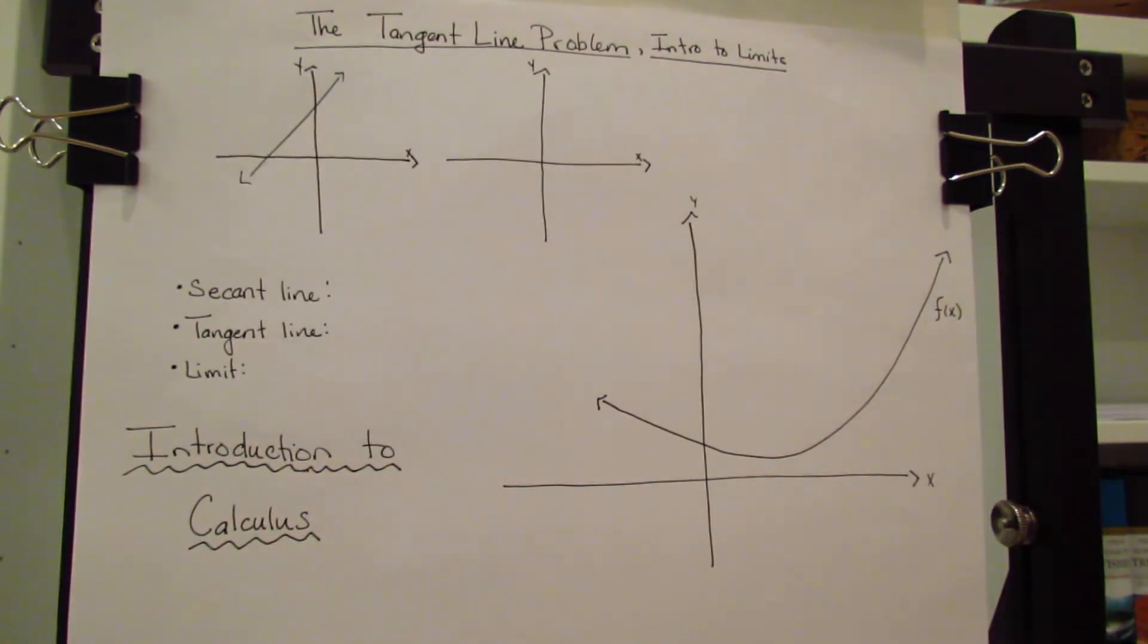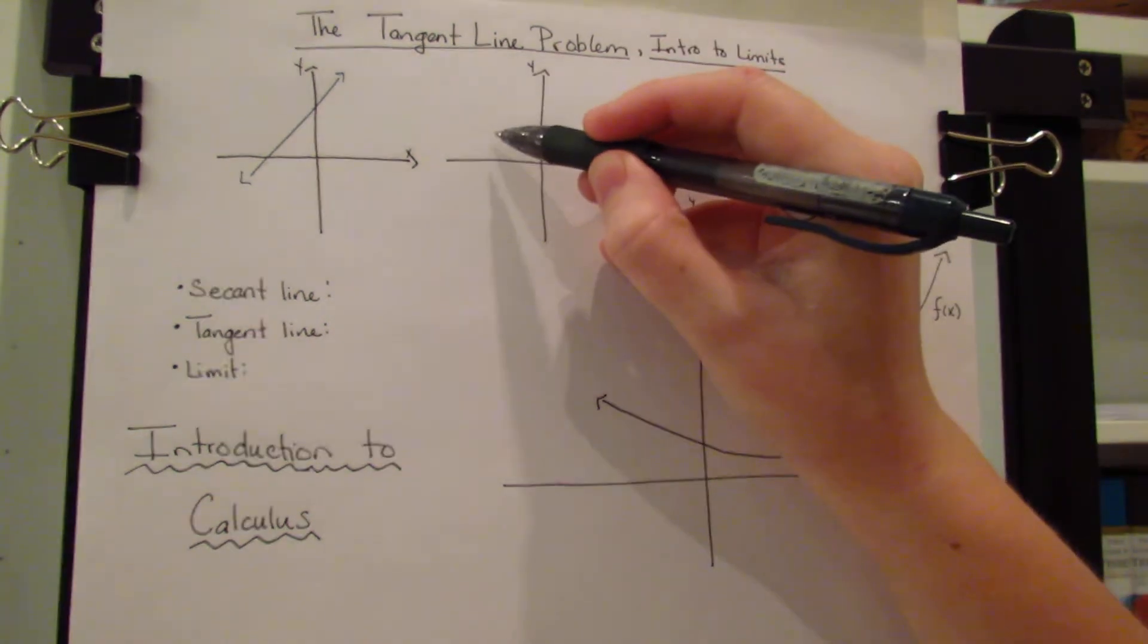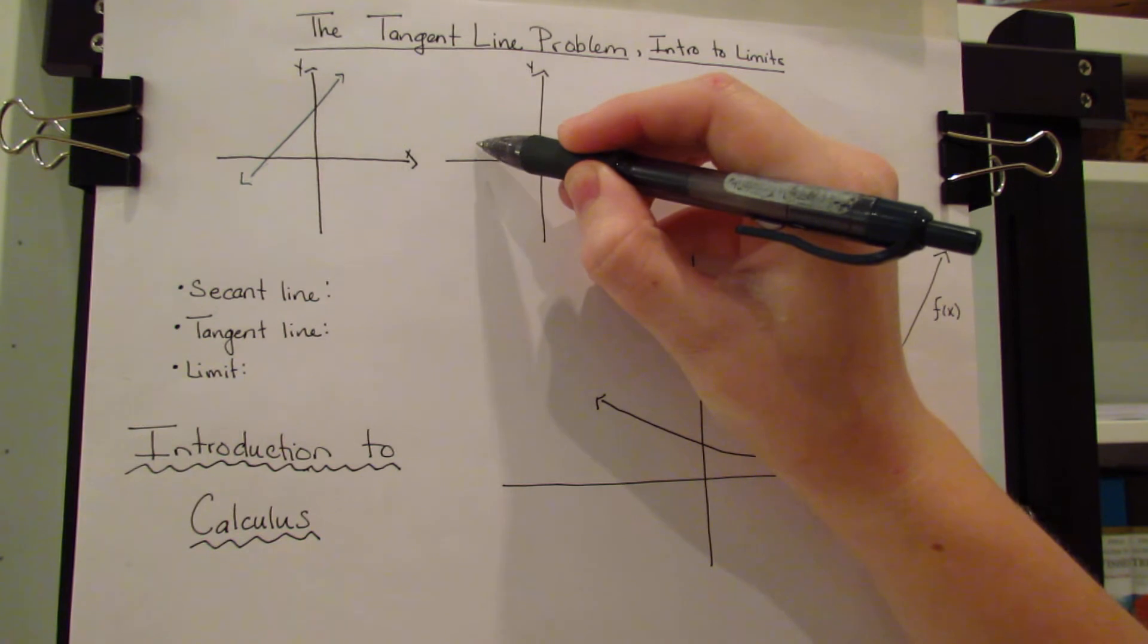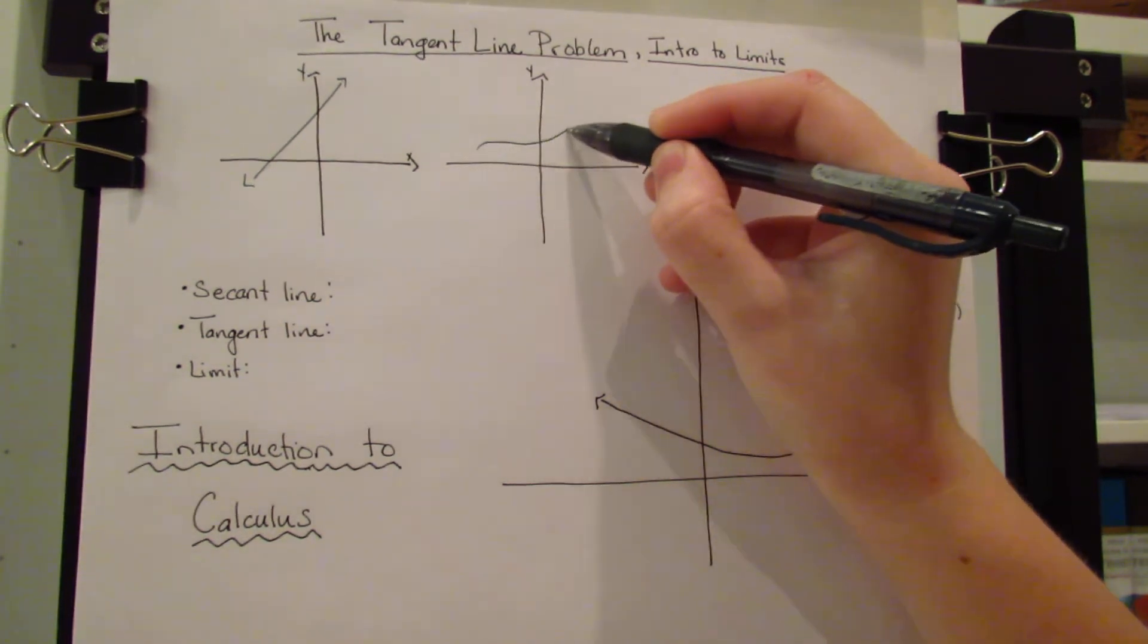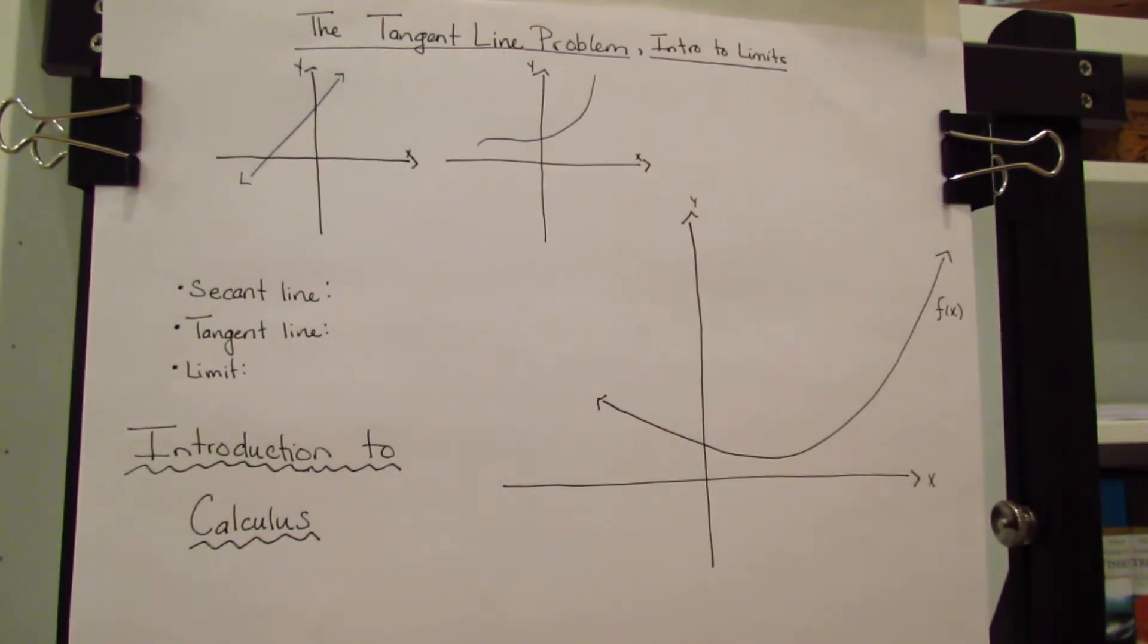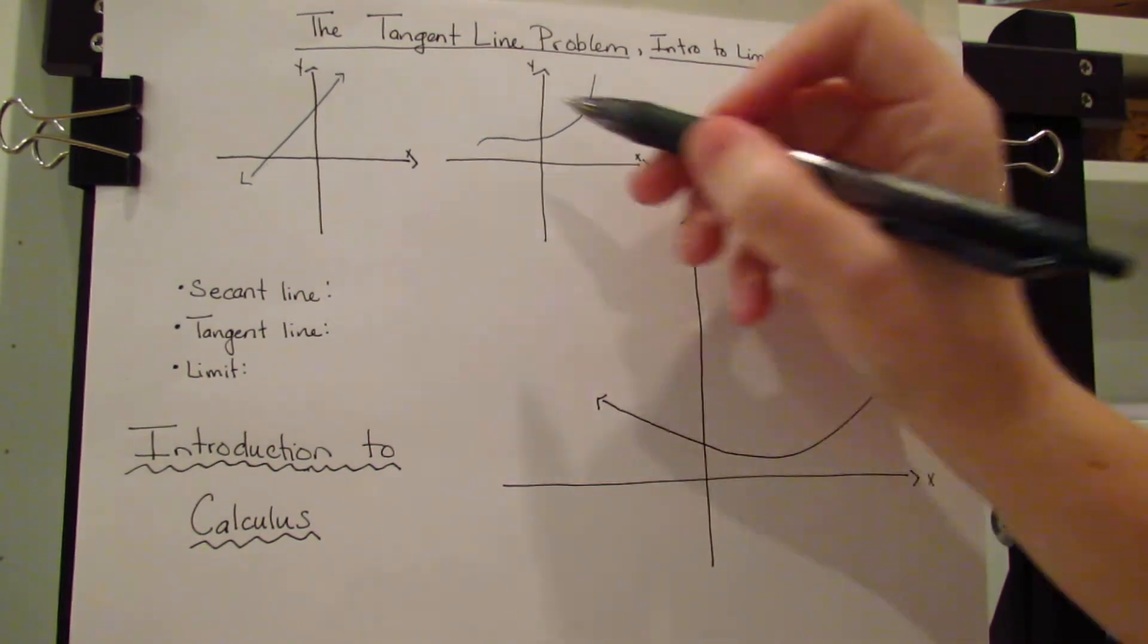You take the graph, you can do delta y over delta x. Different methods you can use to find the slope of that. But what if you had something more along the lines of, well, the slope is changing.